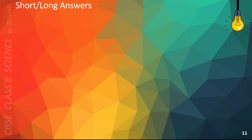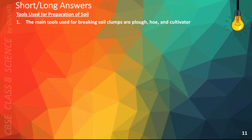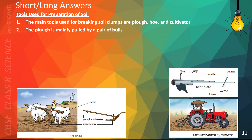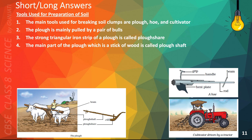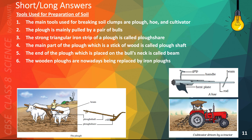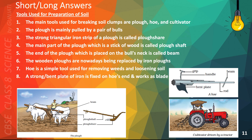As I mentioned earlier, this is the slide where I've arranged the multiple-choice questions to help you answer long or short questions on tools used for crop production. The main tools used for breaking soil clumps are plow, hoe, and cultivator. The plow is mainly pulled by a pair of bulls. The strong triangular iron strip of a plow is called plowshare. The main part of the plow, which is a stick of wood, is called plowshaft. The end of the plow, which is placed on the bull's neck, is called beam. The wooden plows are nowadays being replaced by iron plows. Hoe is a simple tool used for removing weeds and loosening soil. A strong bent plate of iron is fixed on a hoe's end and works as a blade. Nowadays, plowing is done using a cultivator pulled by a tractor.